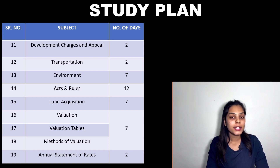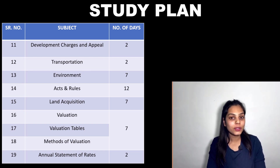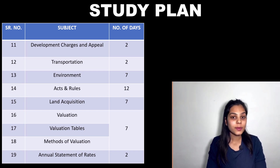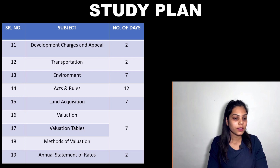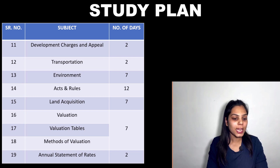Environment is important because MPSC has given the same syllabus in both the general MPSC exam and this ATP exam. Seven days are given for this subject — if you think seven days are less, you can increase the days. Acts and rules is a lengthy subject, so 12 days are given. Land acquisition gets seven days. The valuation chapter, which you have studied earlier in estimating, costing, or contract accounts, gets seven days. Annual statement of rates requires studying DSR — two days are enough.